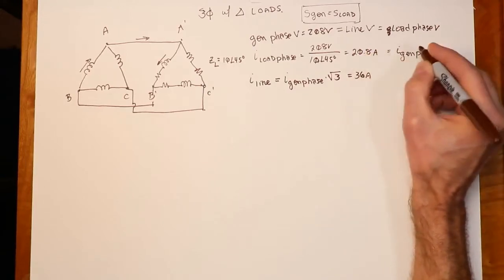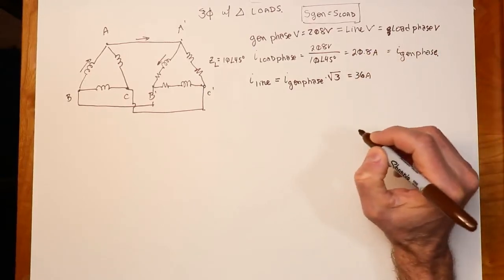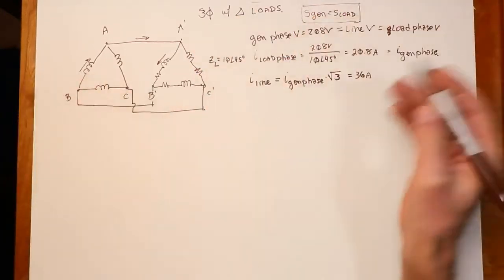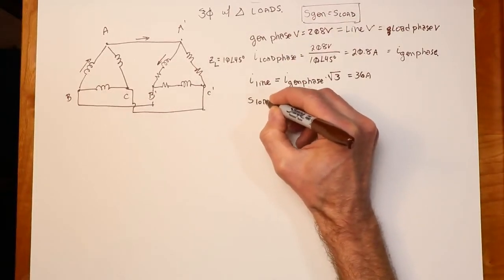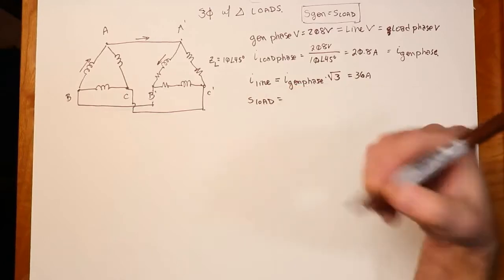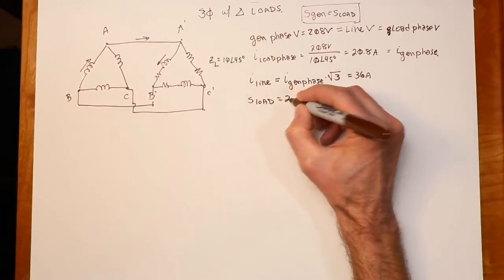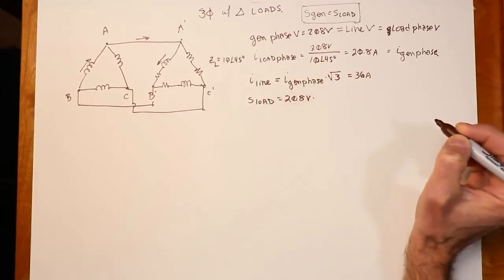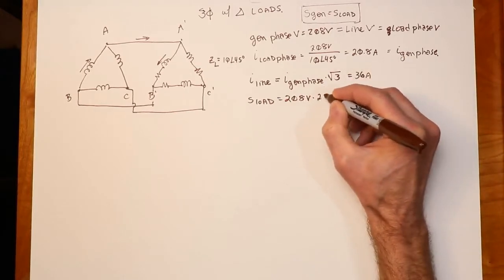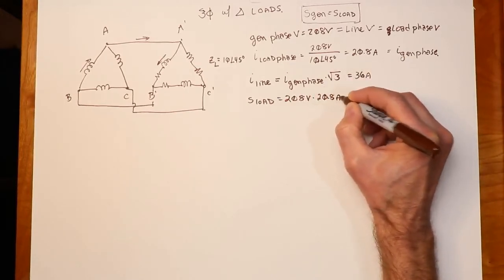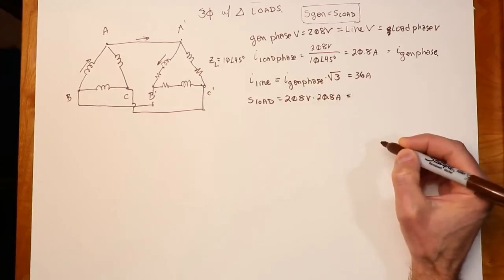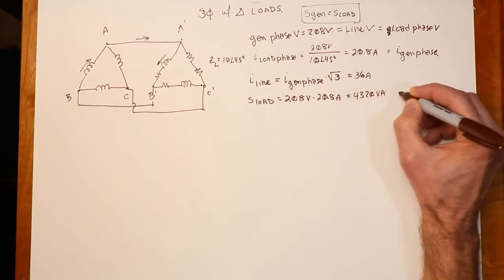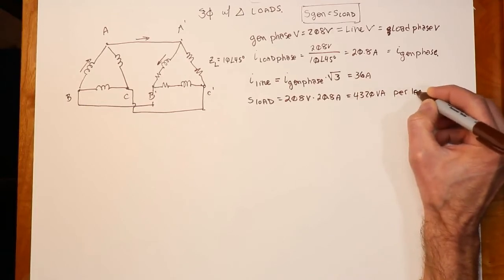So we take 20.8 times square root of 3, we get about 36 amps. And finally, we can figure out what the generator and load apparent power is. What do we have for a voltage? Well, we've got 208. What do we have for current? 20.8. Multiply those out, and we get approximately 4320 volt amps. Again, that's per leg.